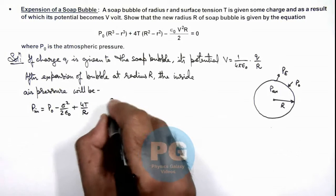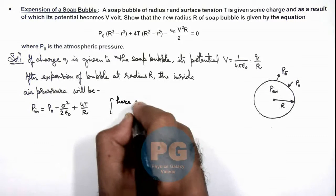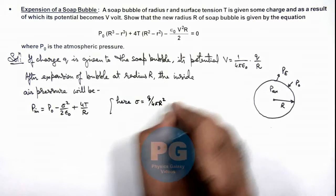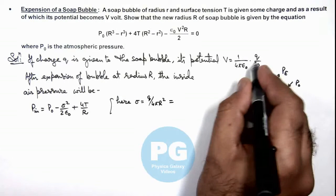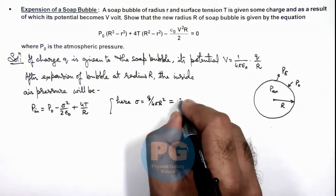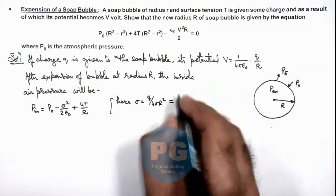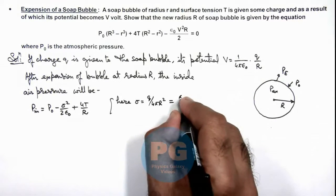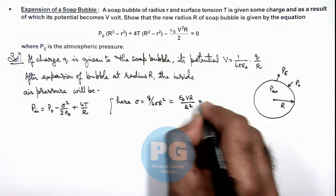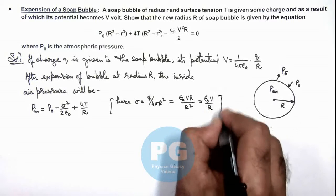And here we can write the value of σ is q/(4πR²). And if we substitute the value of q from this relation, we can see this will be q/(4π) we can substitute as ε₀VR/R², so this is ε₀V/R, the value of σ.